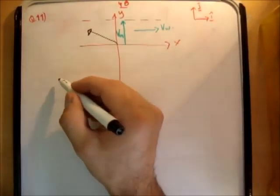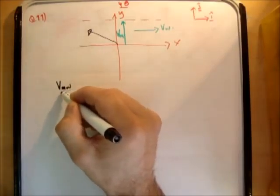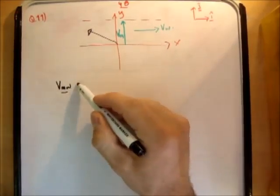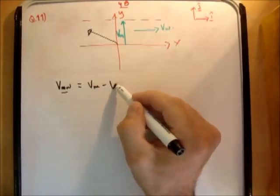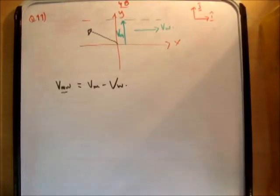So let's just analyze the following. If we said the velocity of the man relative to the water, and we know what that is of course, it's Vm minus Vw.